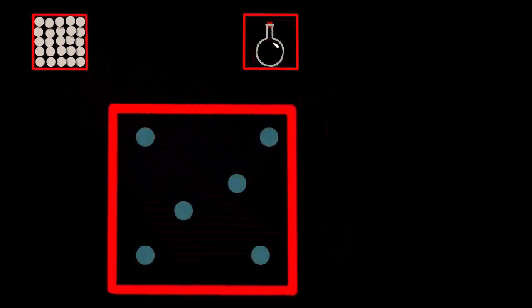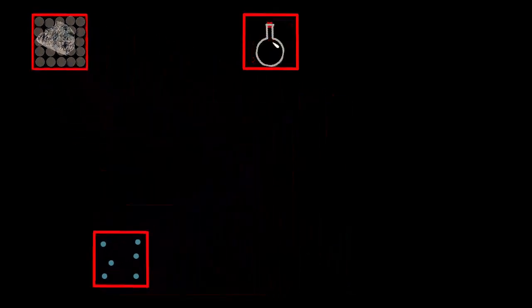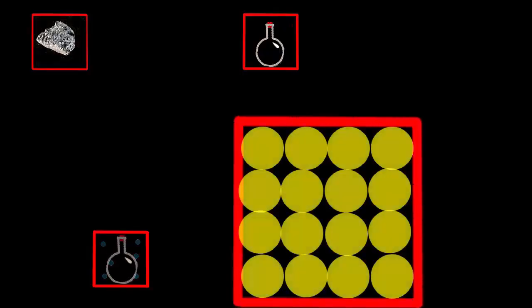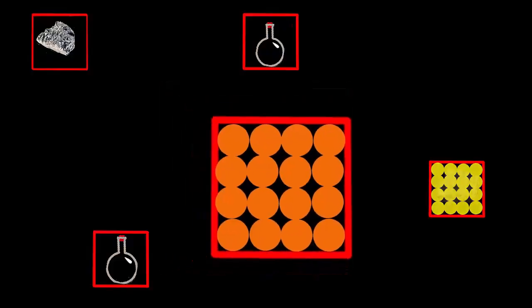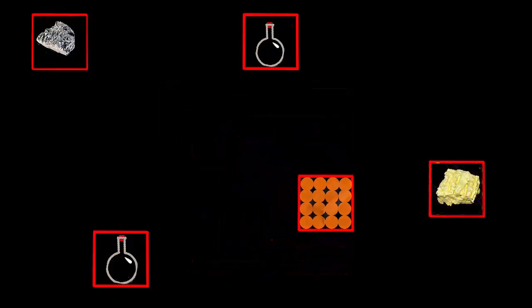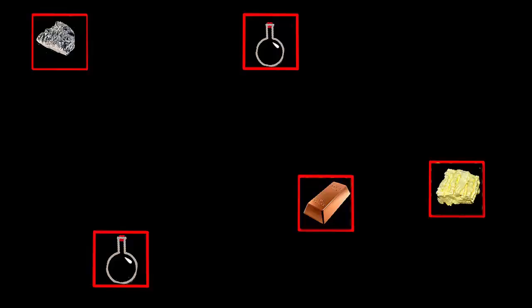It took hundreds of years for scientists to discover all 92 different kinds of atoms that exist. Each kind makes a different substance, because a substance made of only one kind of atom is called an element. There are 92 elements in the universe.